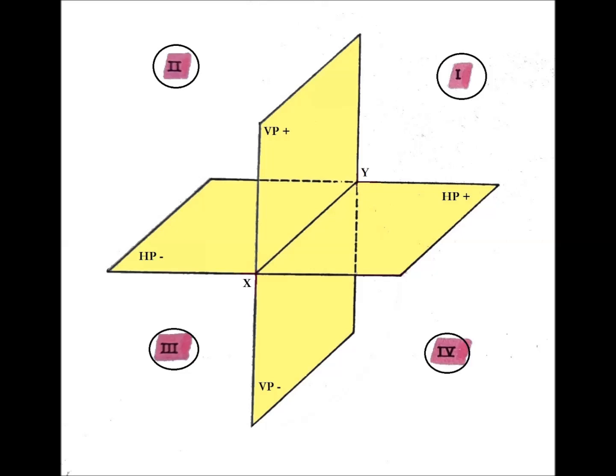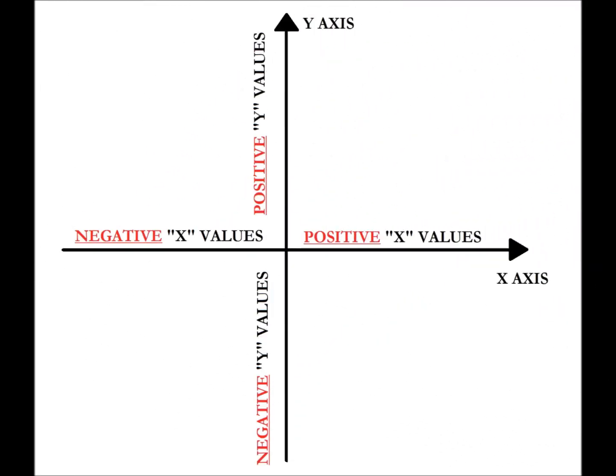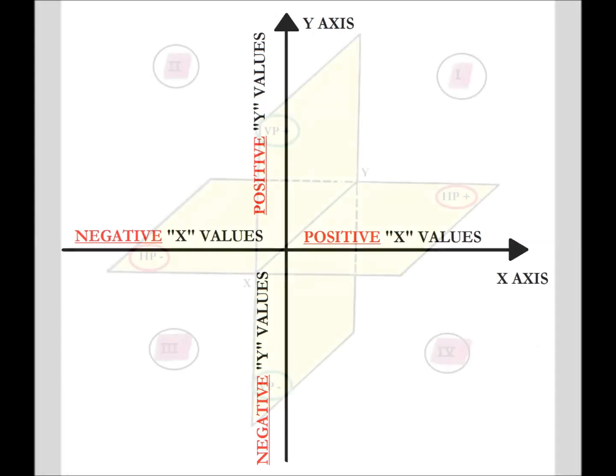Also, the HP and the VP are divided by the XY line into two half planes, for a total of four half planes. The vertical half plane above the XY line is conventionally positive, while the one below is negative. The horizontal half plane on the right, or in front, of the XY line is conventionally positive, while the one on the left, or behind, is negative. As you can see, things are completely similar to what happens on the plane when we talk about orthographic Cartesian axes, and the four sectors into which they divide the plane.